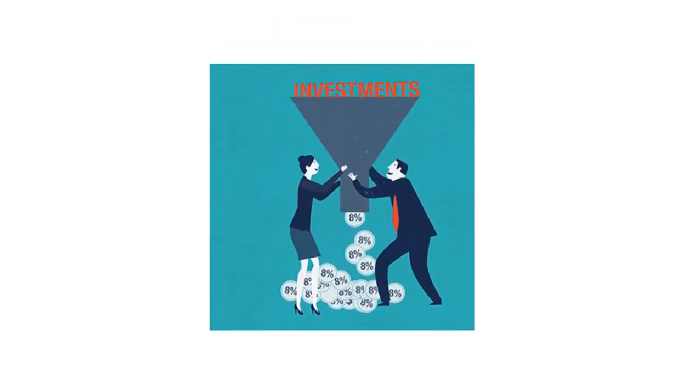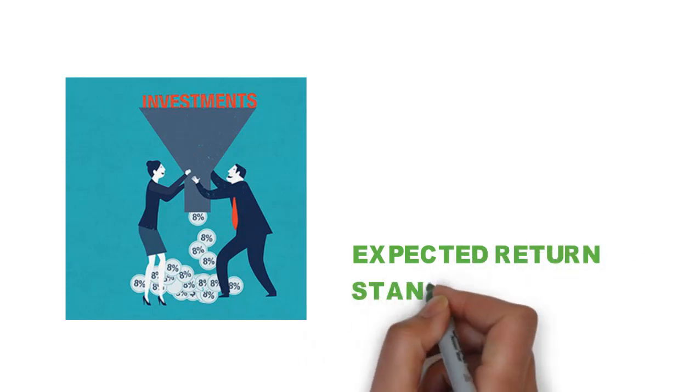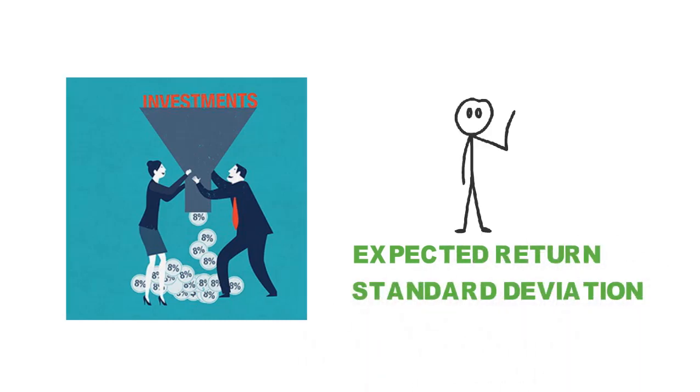In this video, I'm going to discuss the mean or the expected return of a stock and the standard deviation of returns, which is the measure of asset specific risk. Finally, using two numeric examples, I will show how expected returns and standard deviations are calculated.